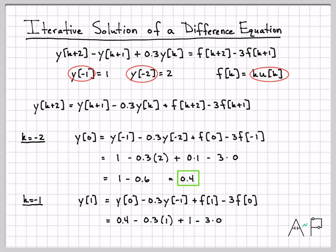So I get a one there, but this is still zero because the unit step at time zero is still zero. If we simplify this a little, 0.4 minus 0.3 plus one is 1.1. So now we've computed our second value. I started off knowing my two initial conditions, and I've now computed the value of the signal at time zero was 0.4 and at time one was 1.1.